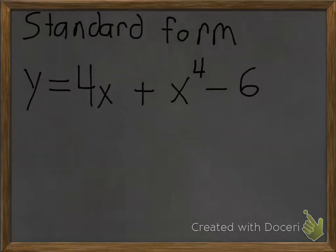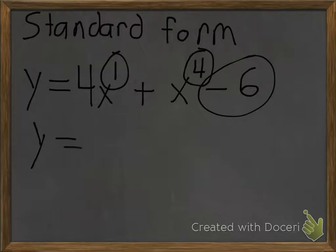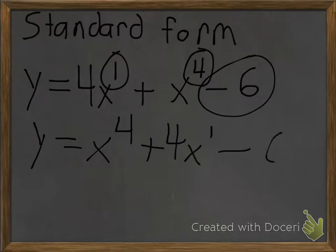Now we're going to learn how to write polynomial equations in standard form. To put it in standard form — remember, 4x is the same thing as 4x to the 1 power — you've got to make sure that all your exponents are in descending order from left to right, all the way to your constant. If you don't have a constant, just make sure your exponents are in descending order from left to right. So it's going to be 4x to the 4th plus 4x to the 1st minus 6. That is now your correct standard form.